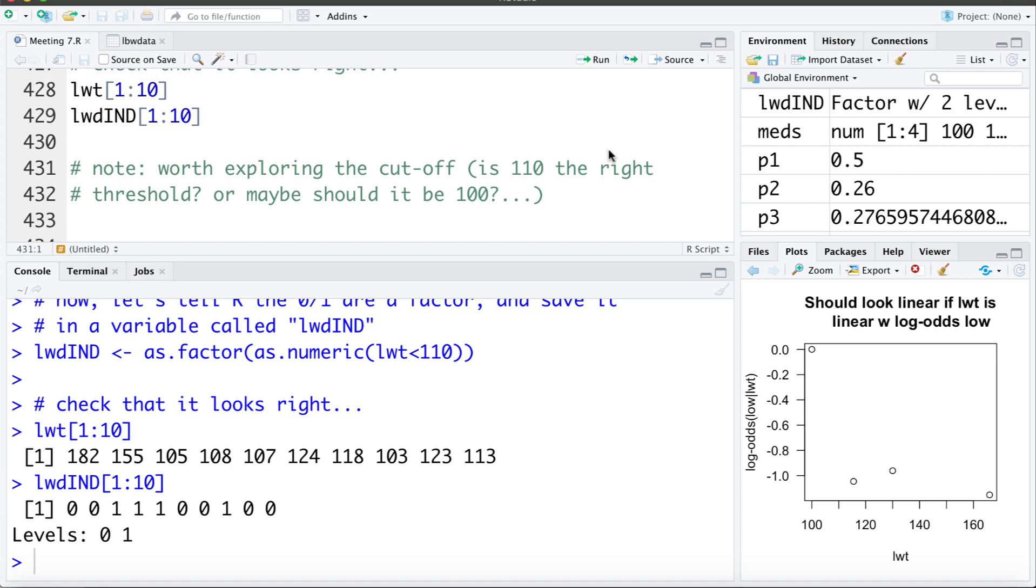So that was a little bit about how we can check linearity and some of the options available to address it when it's not met. And just a quick reminder, we can do these other things like work with log of the variable or the variable squared, or all these other solutions we had for addressing non-linearities. All the ones we saw for linear regression apply to logistic regression as well.